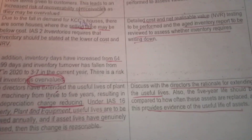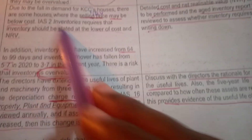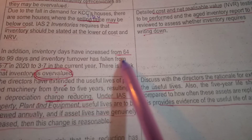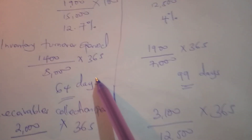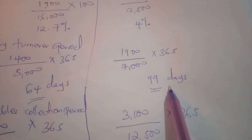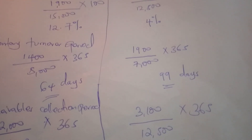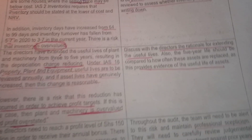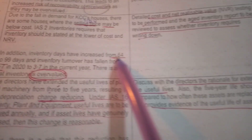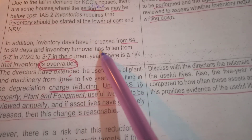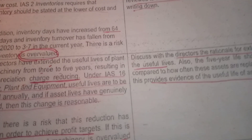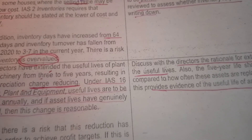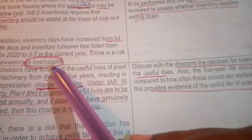There is a risk that inventory may be overvalued. Inventory turnover days have increased from 64 days to 99 days — inventory turnover days measures how long they take to replace stock. As a result, inventory turnover has fallen from 5.7 in 2020 to 3.7 in the current year, so there is a risk that inventory is overvalued.